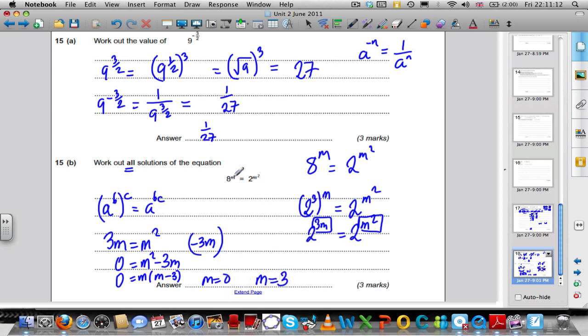If I put 0 in here, 8 to the 0 is 1. m squared, 0 squared is 0. 2 to the 0 is 1. Yeah, that works.